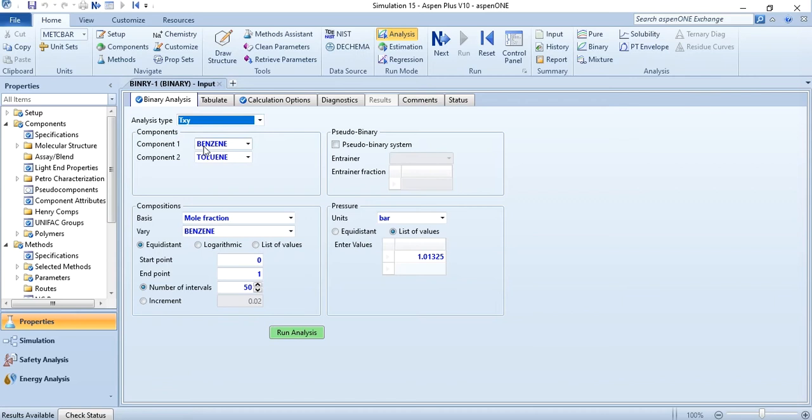Now component selected: component 1 is benzene and component 2 is toluene. If you swipe their positions there will be no change on the simulation. Then in basis it's a mole fraction of benzene from 0 to 1. You can even vary it to toluene and check the results. Obviously the curve may be spread differently. Let me show you how.